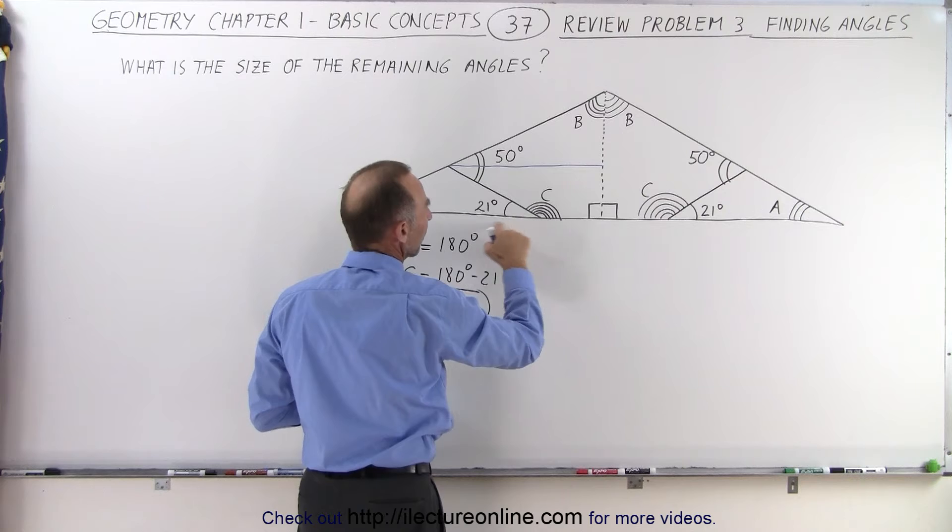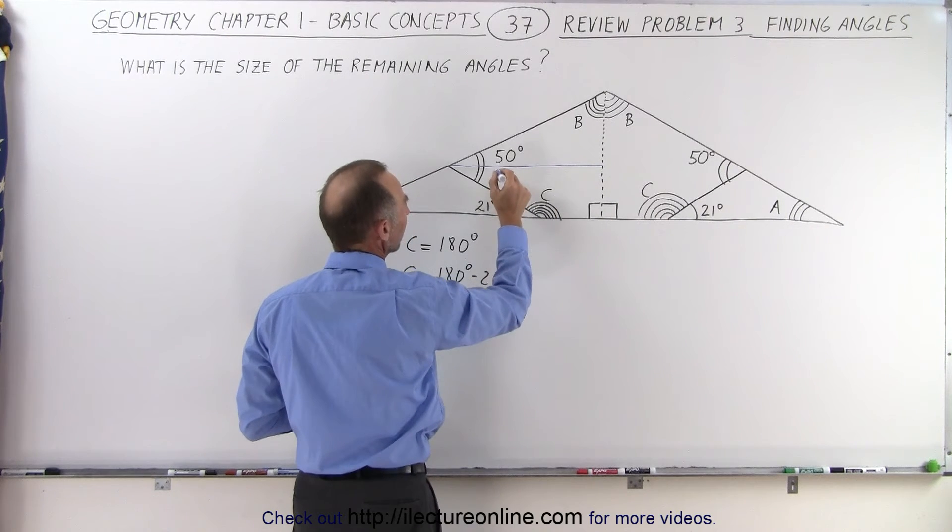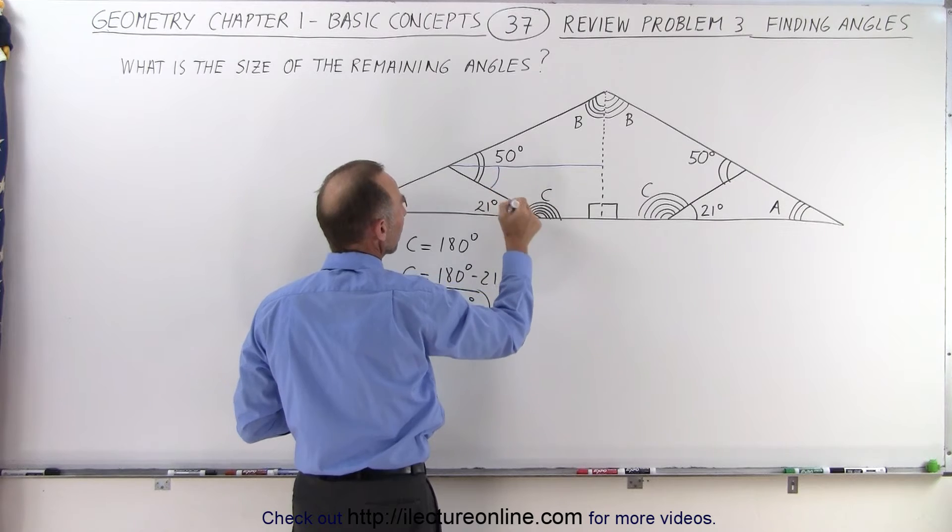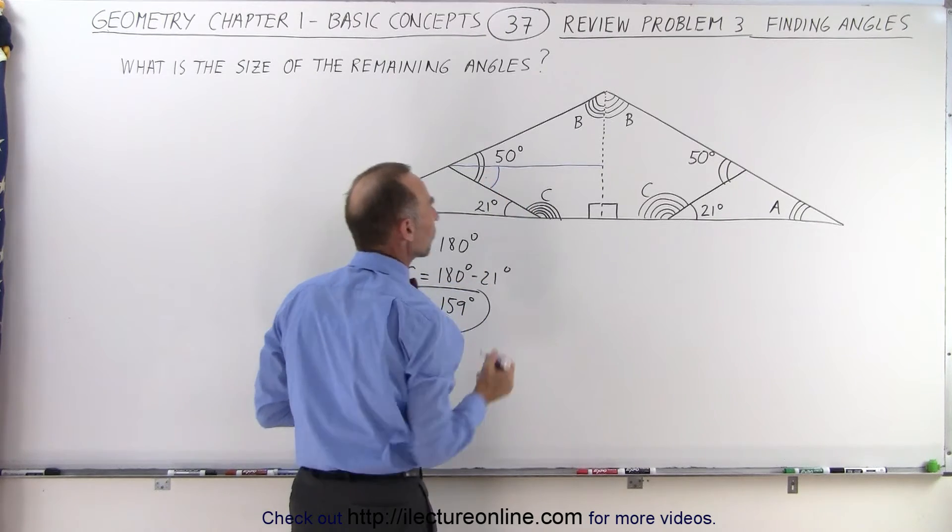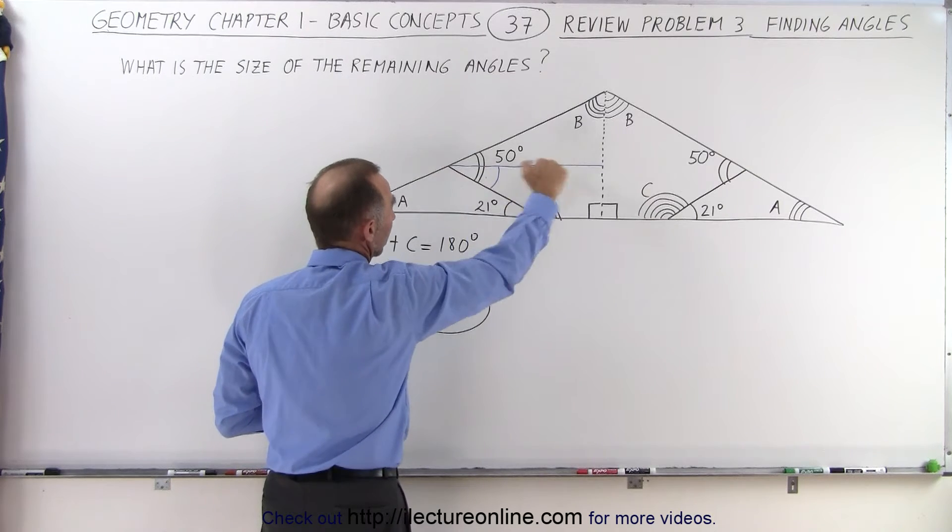As you can see, this side right here should be parallel to this side. So we have this angle here, which means that this angle here must be the same angle. These two angles must be congruent because we have two parallel lines.